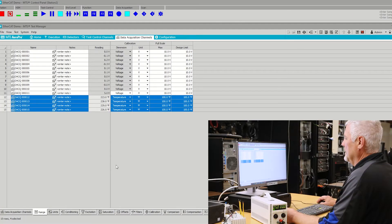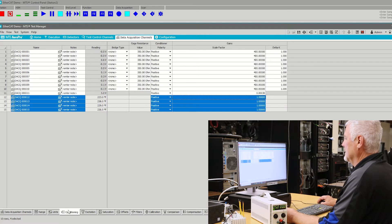To set up and calibrate EtherCAT channels, you must first go to the range tab, set the dimension, the unit, and the full scale. At this point you have two options for calibration. The first option is to set the scale factor on the conditioning tab.